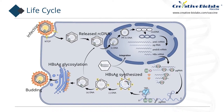The surface antigen HBsAg was synthesized and polymerized in rough endoplasmic reticulum and transported to the anterior cavity of the Golgi apparatus to package the core granules. The assembled HBV particles and subvirus particles were transported to the Golgi matrix for HBsAg glycosylation. Finally, the complete virus particles secrete from the host cells in the form of budding to complete the life cycle.